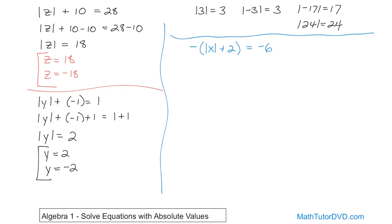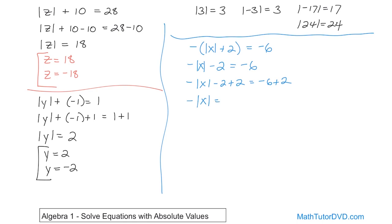We want to get the absolute value of x all by himself, but we have a negative 1 out here. So we need to distribute it: negative times the absolute value of x is just negative absolute value of x, and negative times 2 is negative 2. So we have negative absolute value of x minus 2 is equal to negative 6. Now we add 2 to both sides. The negative 2 plus 2 goes to 0, leaving negative absolute value of x. On the right, negative 6 plus 2 is negative 4. So negative absolute value of x is equal to negative 4.